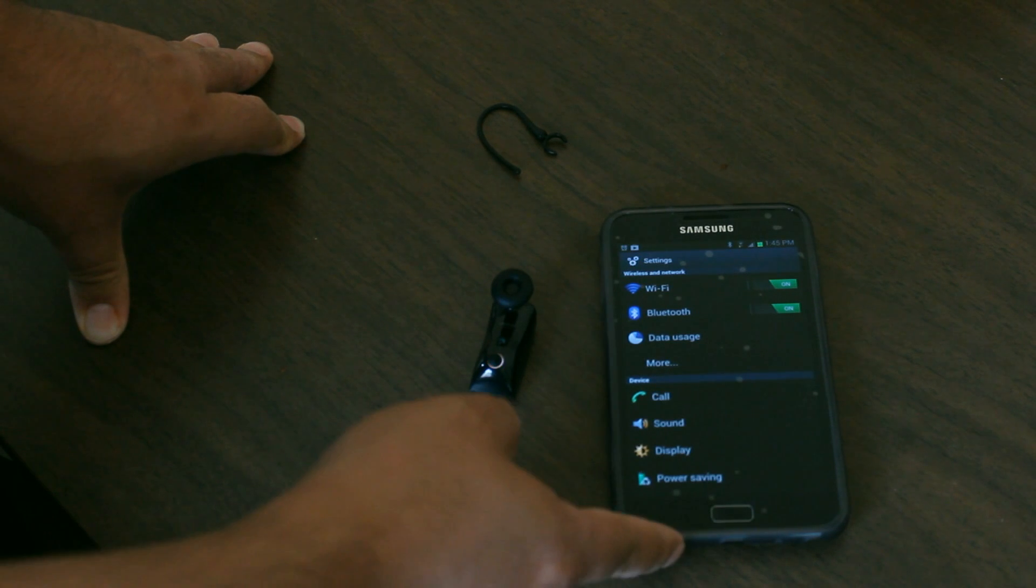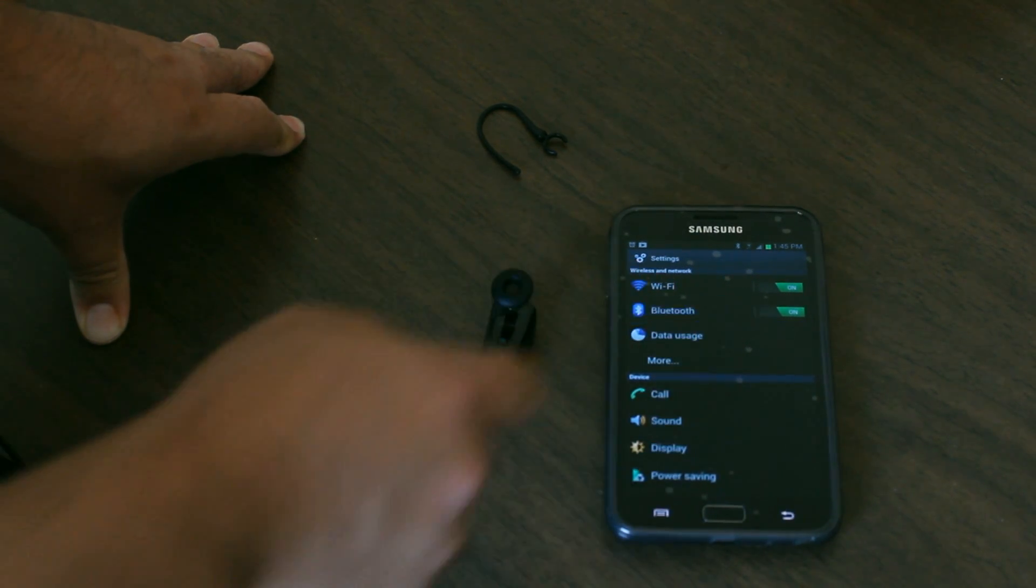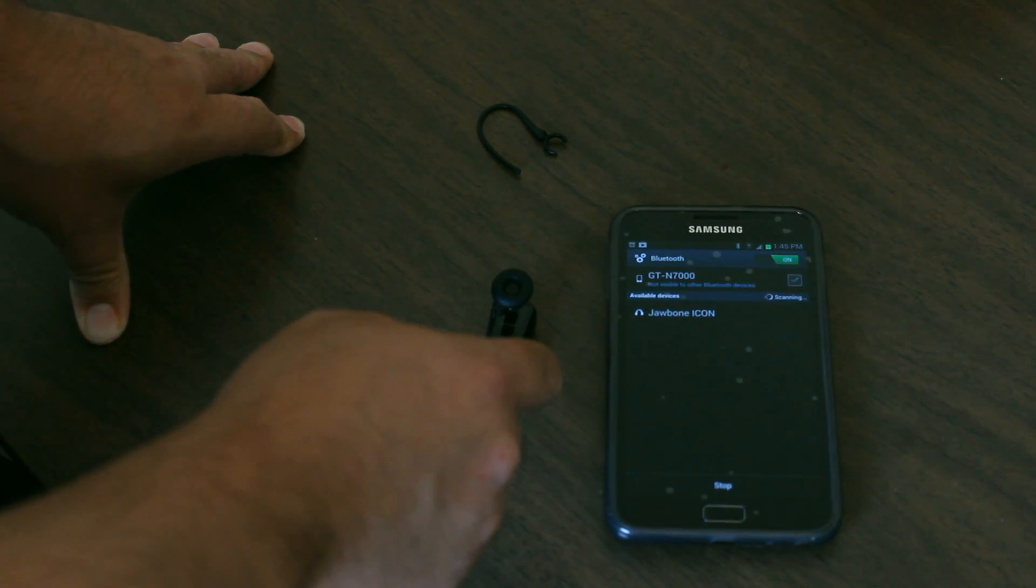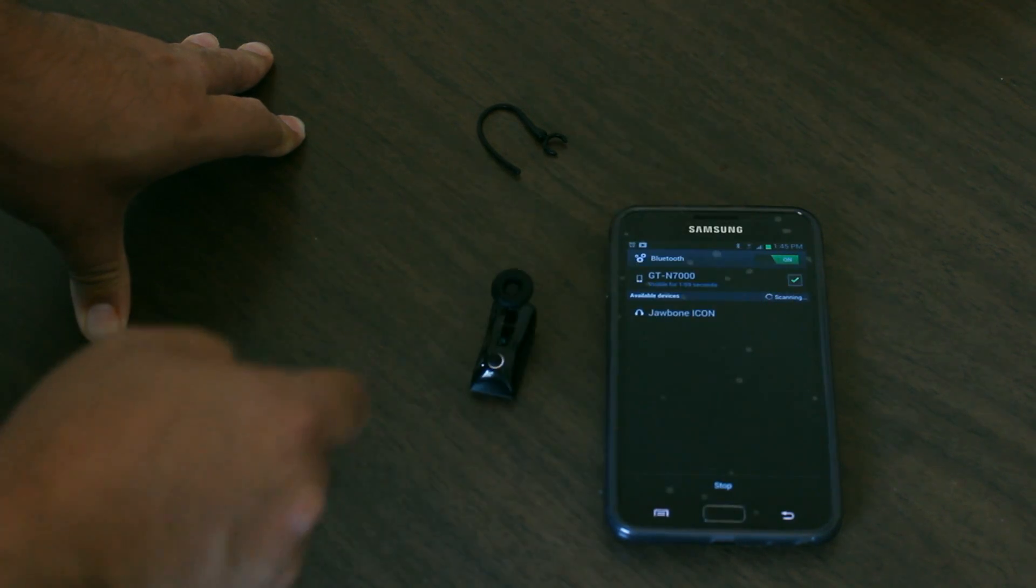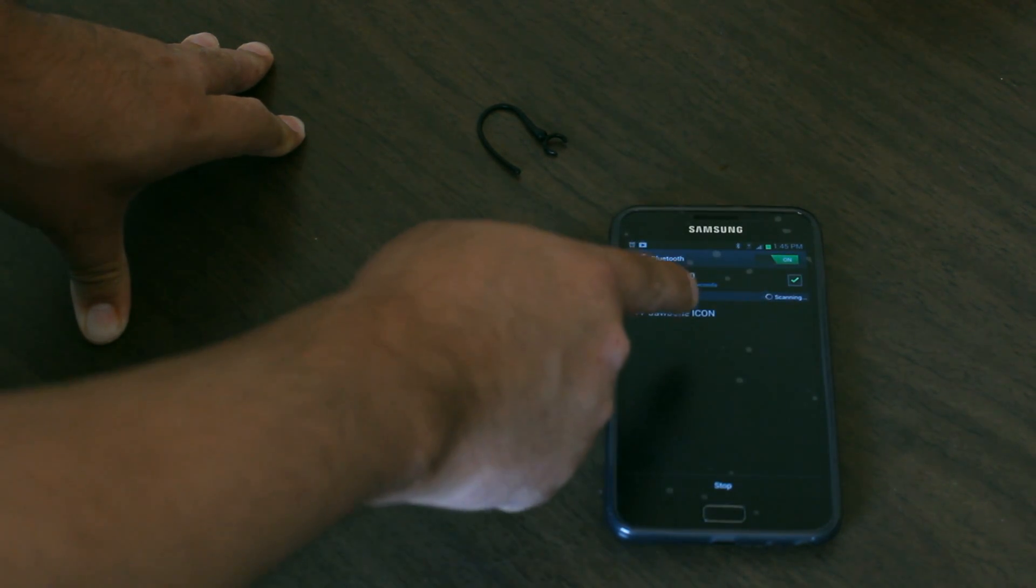Then we go into the Bluetooth menu by pressing on the word Bluetooth itself, and then we need to put the phone into visible mode by clicking that check mark.